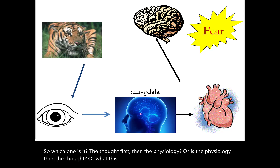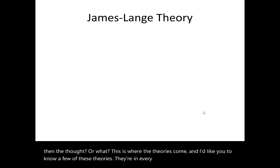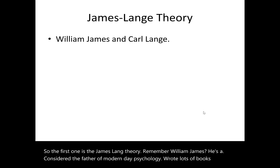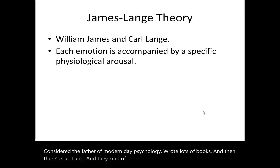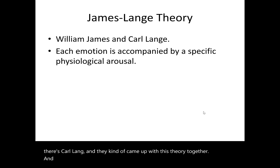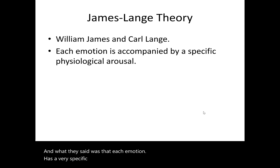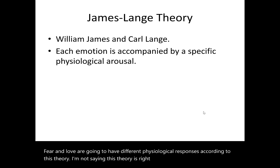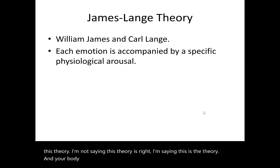This is where the classical theories come in. The first is the James-Lange theory — William James, considered the father of modern psychology, and Carl Lange developed it together. They said that each emotion has a very specific physiological response — fear and love will have different physiological responses — and your body interprets that response to produce the subjective feeling. The face is doing this, the muscles above the eyes are doing this, the jaw muscles, the hair standing up, eyes dilated, heart racing — 'I know what that is, those are the physiology of fear, so that's what I'm going to feel.'